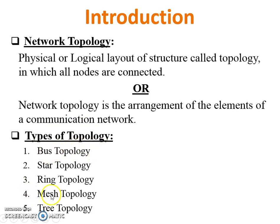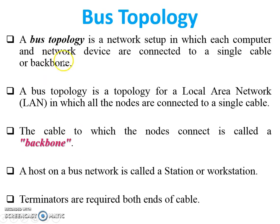There are four main types of topology: bus topology, star topology, ring topology, and mesh topology. The fifth one, tree topology, is a hybrid topology — meaning a combination of any two of the above topologies. Today we will discuss bus topology. Bus topology is a network setup in which each computer and network device is connected to a single cable or backbone.